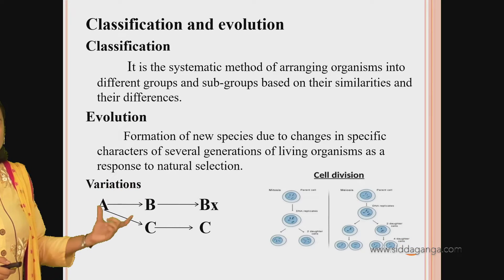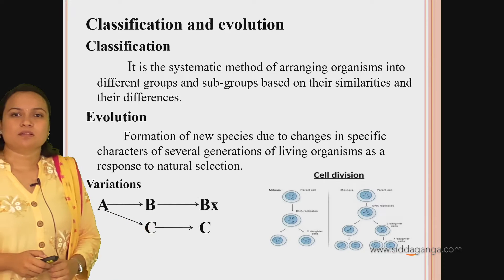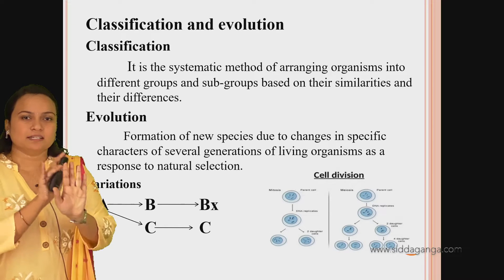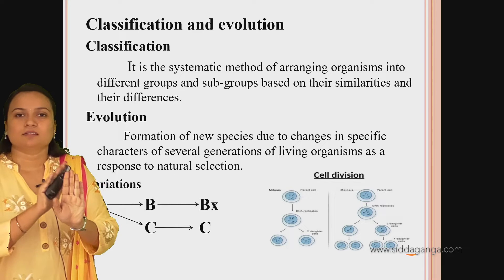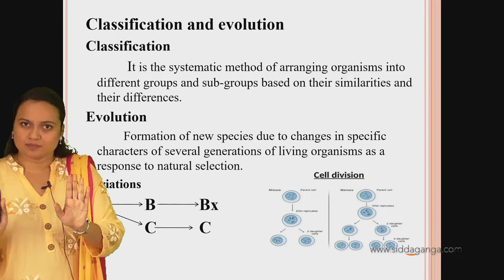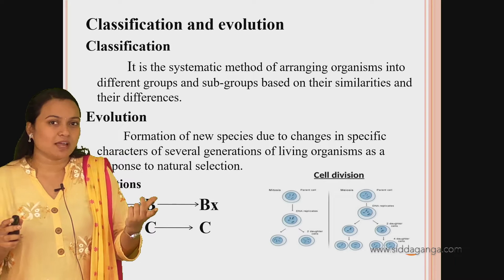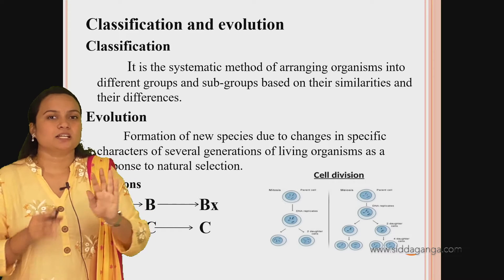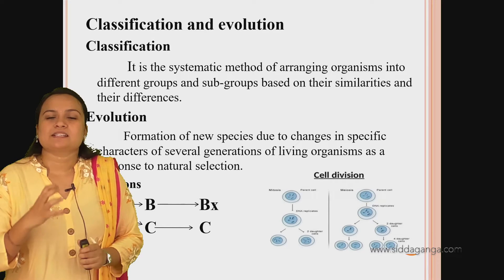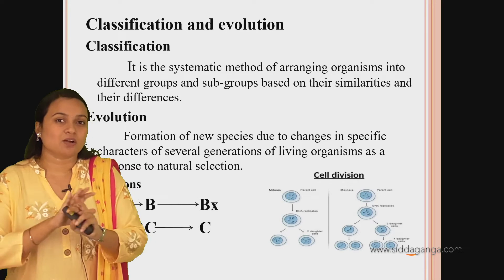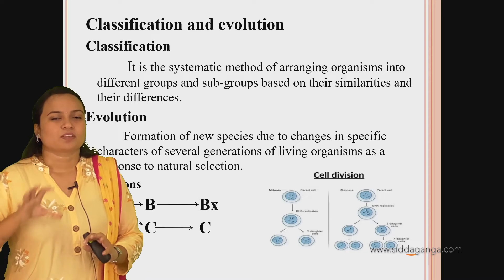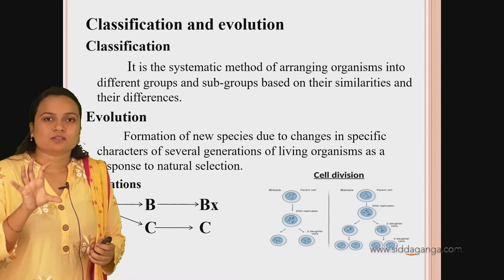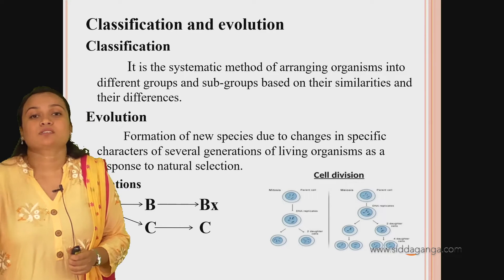During cell division, the initial thing is DNA copying. The DNA which is present must be copied - a duplicate. After DNA copying, the nucleus will divide, then the cytoplasm will divide. While DNA copying, if there are any variations or errors during the copying process, it will lead to variations in the design of that cell. A cell's design will change, functions will change, and it will form a new individual - a new cell which is somewhat dissimilar to the parent.